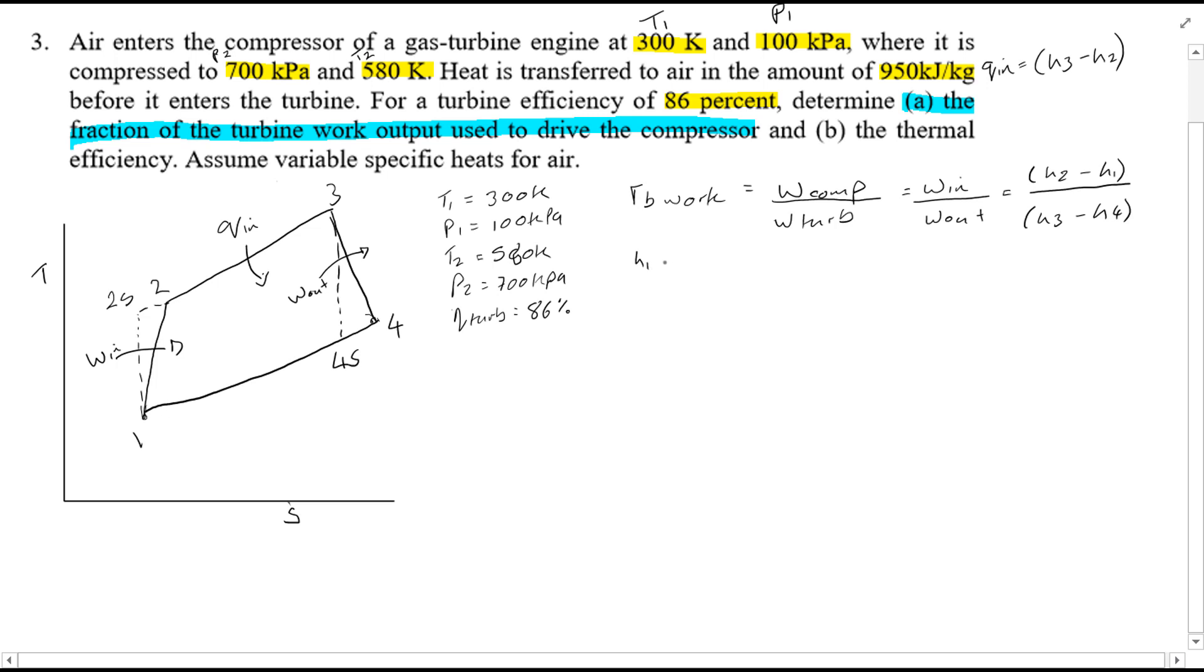Now in order to find H1, we've been given a temperature at 1, so using the table A17 you'll find that H1 is equal to 300.19 kJ per kg. You'll find that H2, since T2 is also given, H2 is equal to 586.04 kJ per kg. So therefore we found H1 and H2.